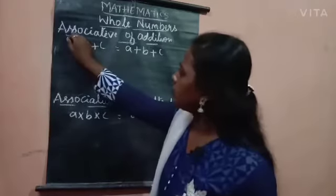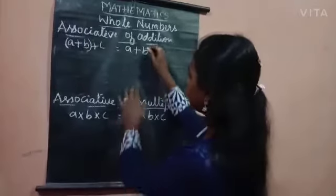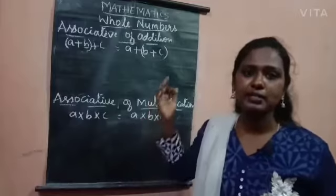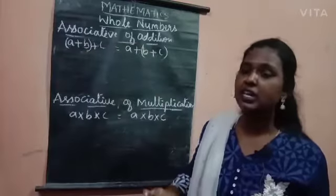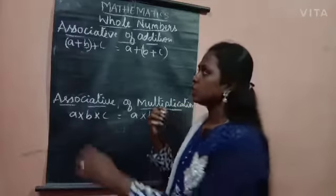I am going to apply a bracket for A plus B and here B plus C. So let us apply some of the numbers in the place of alphabets and let us see whether the associative of addition satisfies or not.